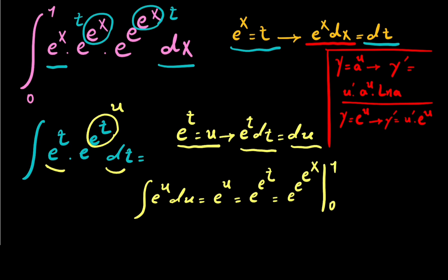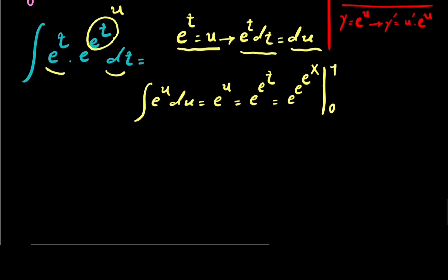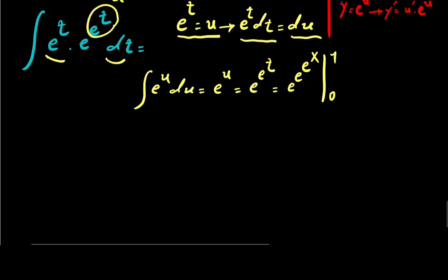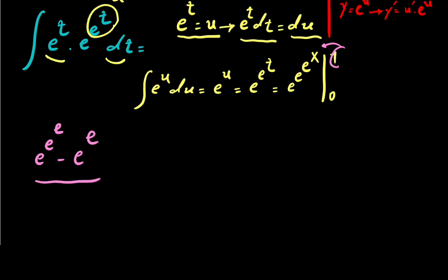Evaluating from 0 to 1: putting in 1 gives e to the e to the e, and putting in 0 — since e to the power of 0 equals 1 — gives e to the power of e. So the final answer is e to the e to the e minus e to the e. What a beautiful answer! If you like the video, don't forget to subscribe and like, and thanks for watching.